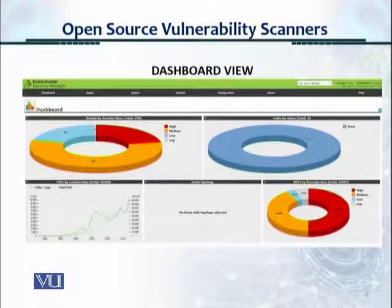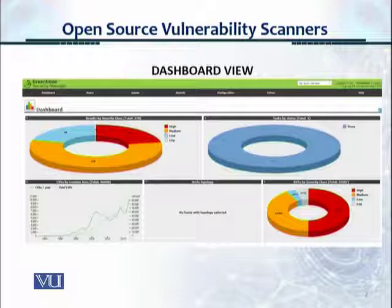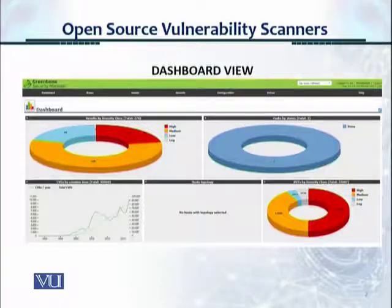The dashboard view gives you icons at the top: Scans, Assets, Security Info, Configuration, Extras, and Help. The dashboard also shows results by severity — high, medium, and low — using color coding, with red for high-severity items. It also shows CVEs by creation time and the total number of CVEs. This is the overall front screen.